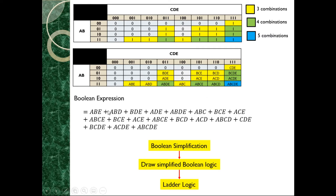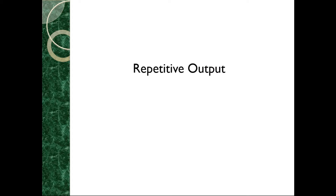From these combinations we derive the Boolean expression. From the raw Boolean expression, you perform Boolean simplification, then draw the simplified Boolean logic, and transfer that into ladder logic. This is how we program the PLC based on the majority inputs of this circuit — by finding combinations from the truth table, it becomes easy to determine which combinations are useful for determining the output.